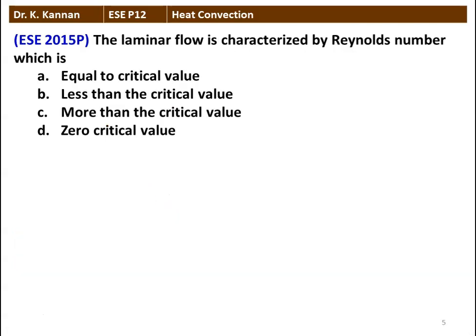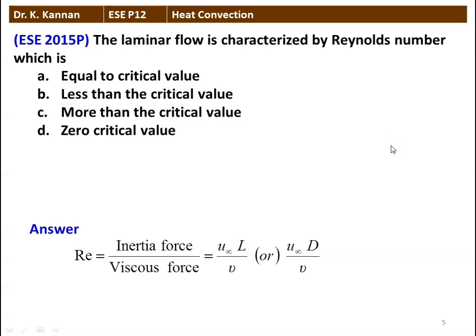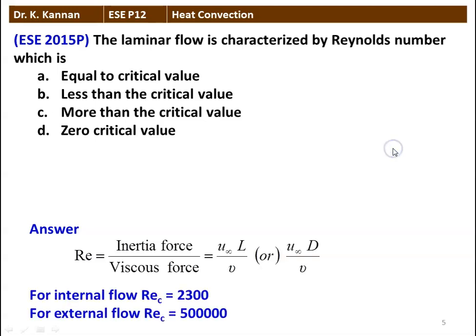Next question: laminar flow is characterized by Reynolds number which is — equal to, less than, more than, or zero critical value. Reynolds number is defined as inertia force divided by viscous force: Re = U_infinity*L/nu for a plate, or U_infinity*D/nu for a cylindrical system. Flow is laminar when Reynolds number is less than the critical value — 2300 for internal flow and 5×10⁵ for external flow.